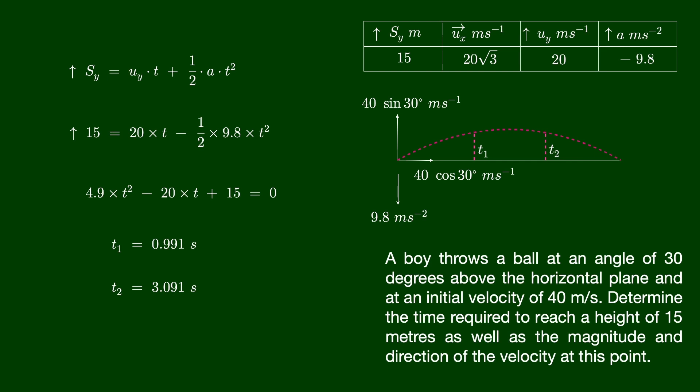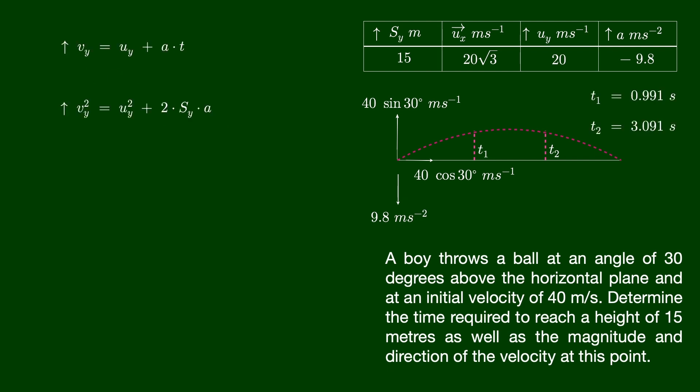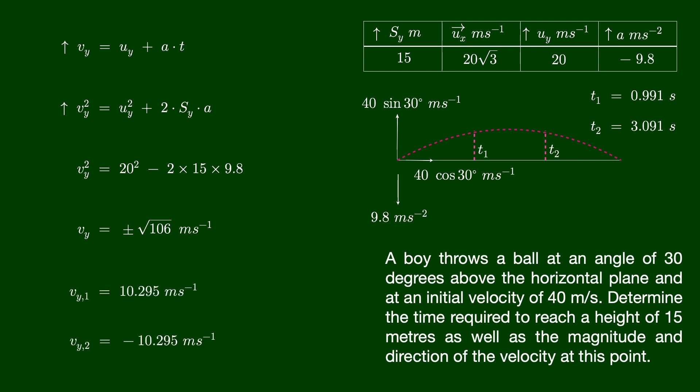We know that the ball's horizontal velocity remains constant during its journey. As a result, at these two moments in time, we just need to compute the vertical component of the velocity. We need to calculate the vertical velocity at intervals t1 and t2. Using either of these two equations, we can calculate the velocities. Both of these equations will give the same answer. However, I favor the second equation, since if you make a mistake calculating time, you will also make a mistake calculating the velocities.